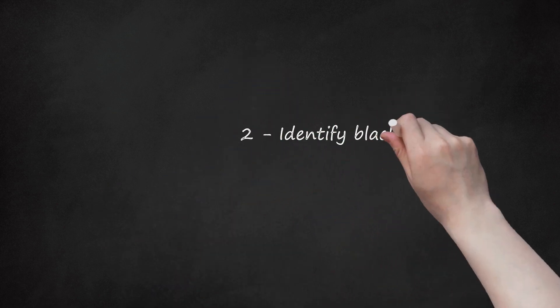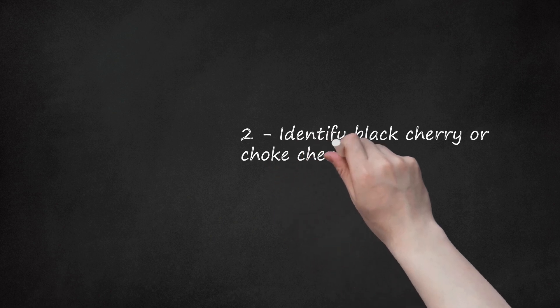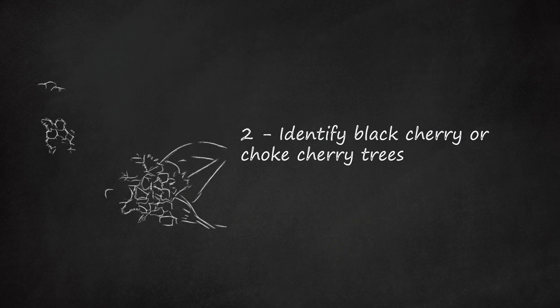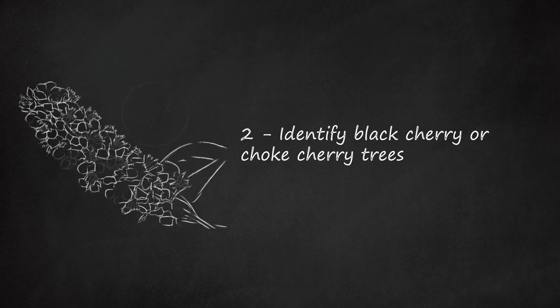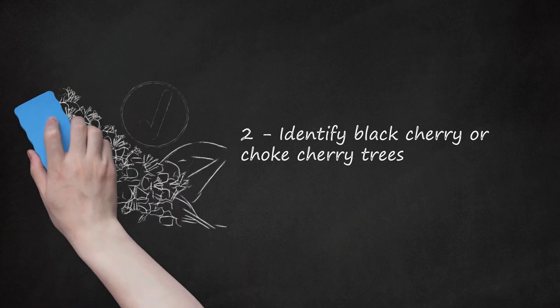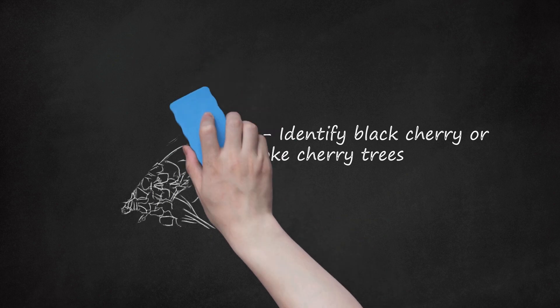Second, identify black cherry or choke cherry trees. These trees are native to North America. They can grow very large, and they are usually quite straight. Their flowers are smaller and white. The flowers will appear in long narrow clusters after the leaves come out in the spring. If you see orange-colored fuzz along the midrib of various leaves, it's probably a black cherry tree. Otherwise, it's likely a chokecherry.